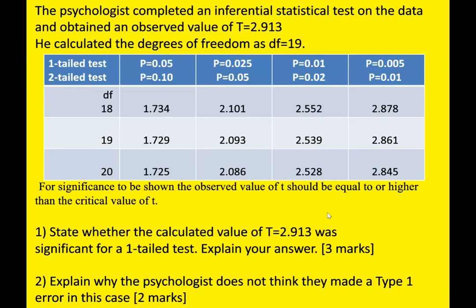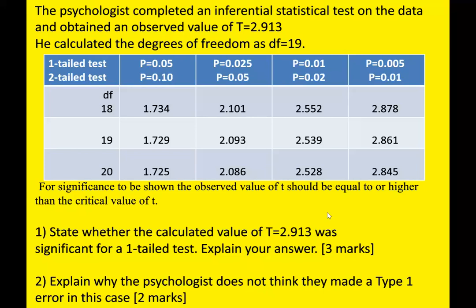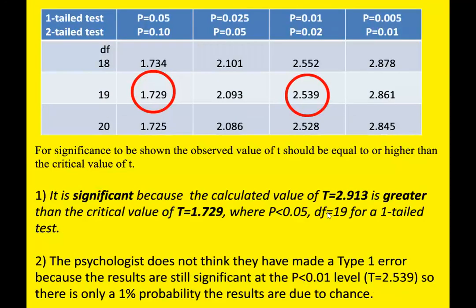If you need help, go back in the video to see how we did it before. Then the next question says: 'Explain why the psychologist did not think they had made a Type 1 error in this case' — again, you'll be looking at the more stringent probability level and using the template answer. Pause the video now and answer those questions. Don't just look at the answers below — pause, go back, and actually answer the questions or you won't learn properly.